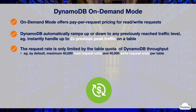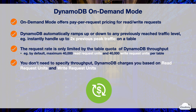The request rate is only limited by the table quota of DynamoDB throughput. By default, with on-demand capacity, each table can have a maximum of 40,000 read request units and 40,000 write request units. You can increase the throughput limit using the AWS Support console. You can choose on-demand mode for both new and existing tables without changing your application code. When you enable on-demand mode, you don't need to specify the read and write throughput that you expect the application to perform.